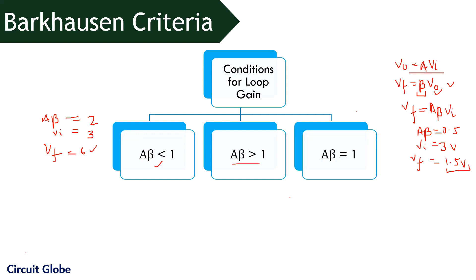Resultantly, the amplitude of the oscillation will also show increase. Thus, both the cases are not providing sustained oscillations. As in the first case, we are having decrease in value and in the second case, we are having increased values. Now, if we consider A beta is equal to 1, then in this particular case, Vf will become equal to Vi, that is the input supply voltage.